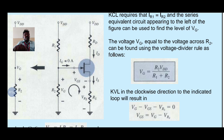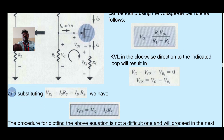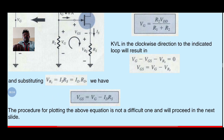Applying KVL in the clockwise direction to the indicated loop results in VGS minus VG minus VRS equal to 0, so VGS equal to VG minus VRS. Substituting the value for VRS as ID into RS gives VGS equal to VG minus ID into RS. The procedure for plotting this equation will proceed in the next slide.